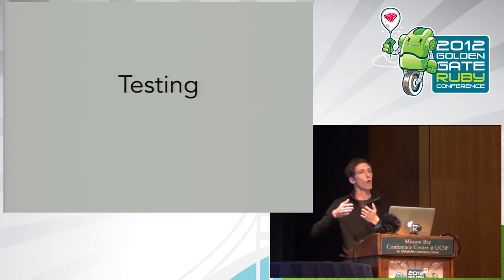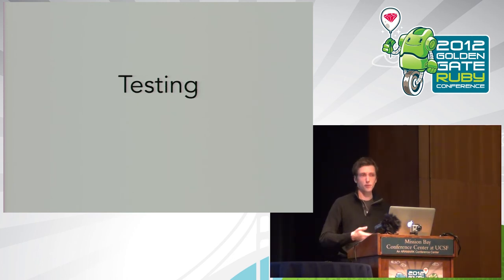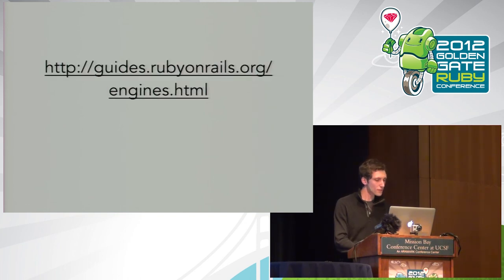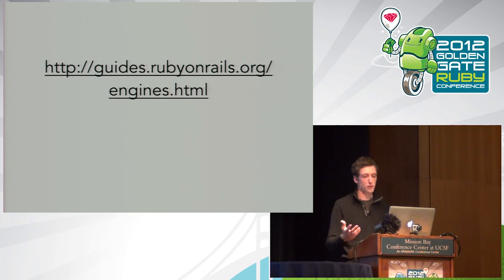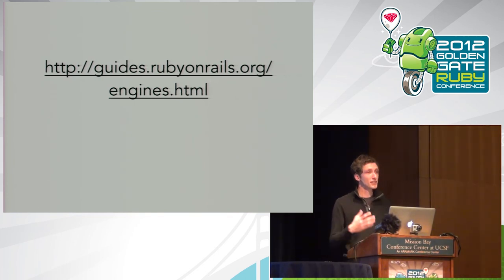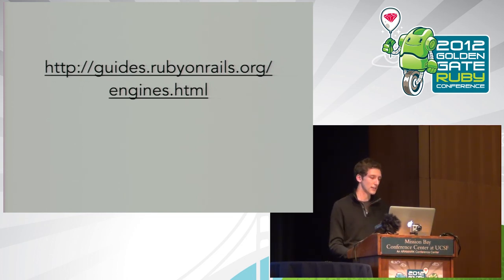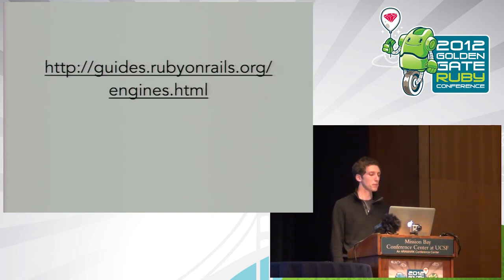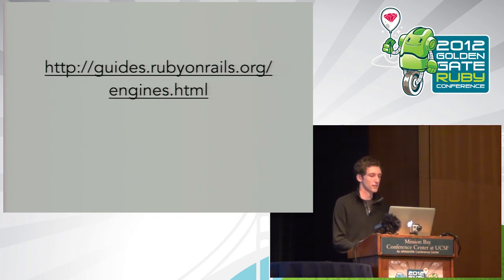It's a little bit hacky to have a whole Rails application in your test directory, but it's the best way to do it and it works. You can even create multiple dummy applications if you want different configurations. For more detail, I really encourage you to go to the Rails engines guide — it's written and compiled mostly by Ryan Bigg, and it's a really good resource for getting started with engines.